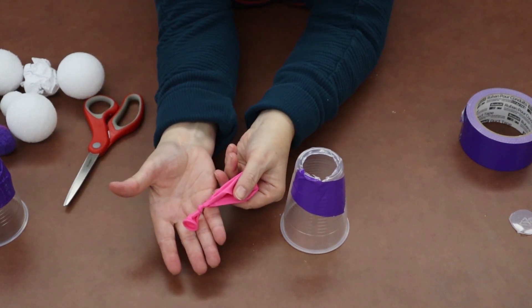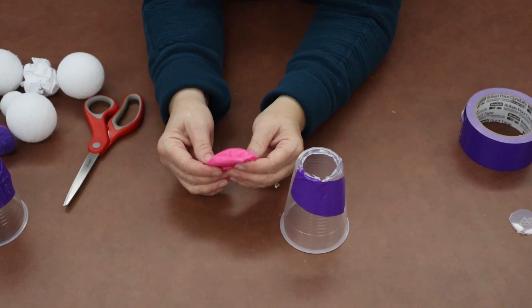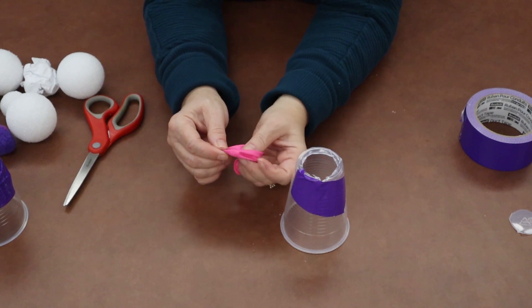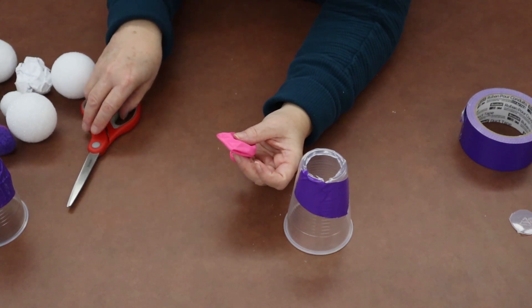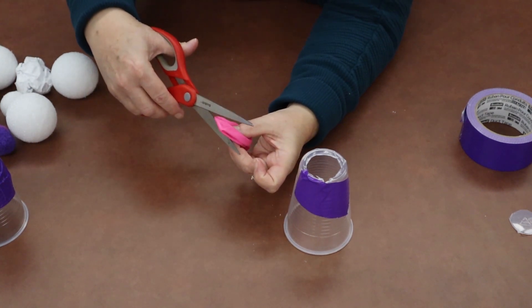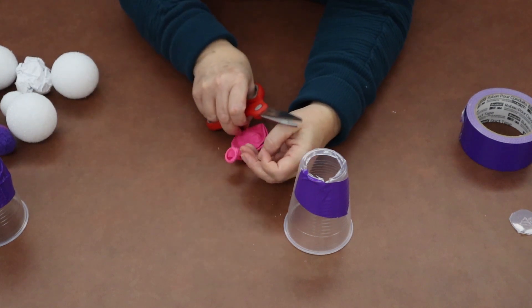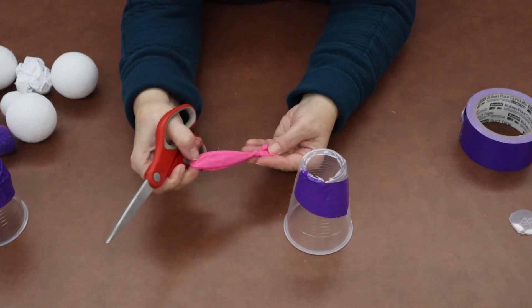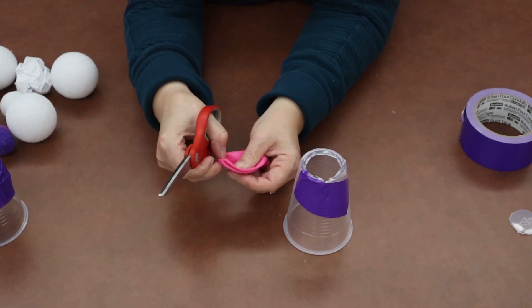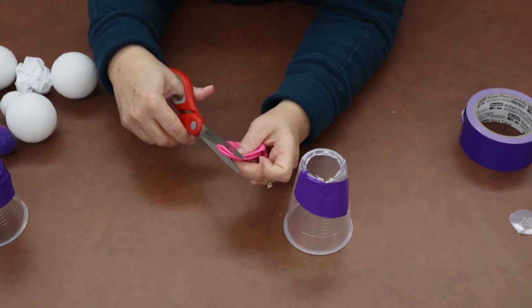So we've got the knot in that end, and then we're going to take the scissors and we're going to cut off the other end that we haven't tied of the balloon. See, we've still got the knot here, and we're going to cut this end of the balloon off.